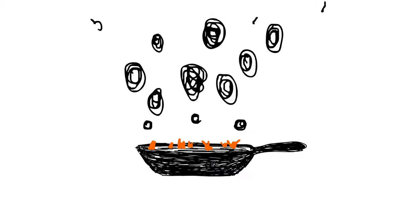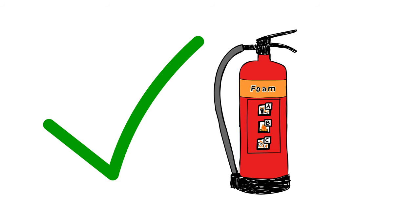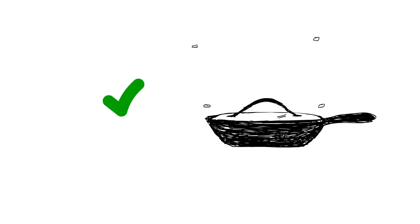You want to stop the fire from getting oxygen. You can do this with an A-B-C rated fire extinguisher, by pouring baking soda on the fire, or by smothering the fire with a lid.